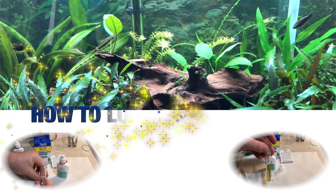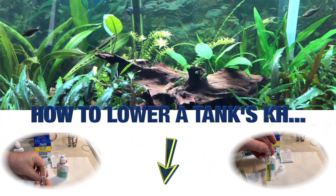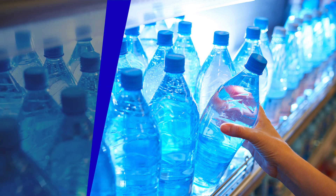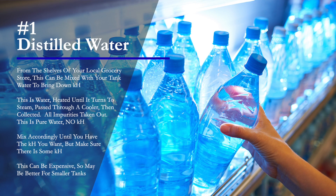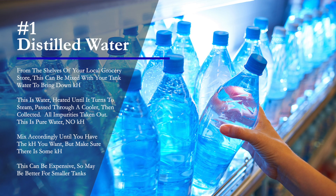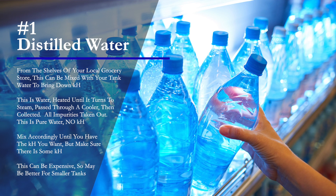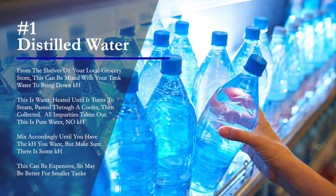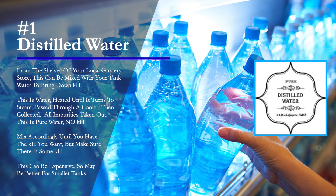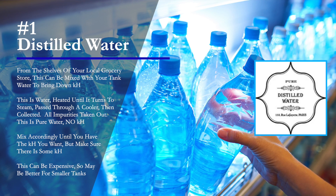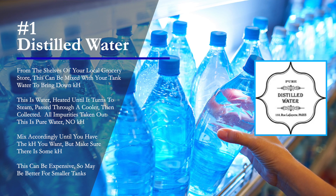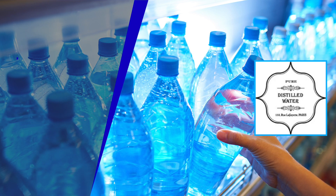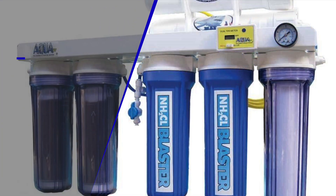Now let's talk about how to lower a tank's KH. Number one: you can simply use distilled water from the shelves of your local grocery store. This is water that's heated until it turns into steam, passes through a cooler, is collected, and all the impurities are taken out — it's pure water with no KH. You can mix this with your tank water until you get your desired KH, but it can be expensive to buy distilled water all the time — that's the only drawback.